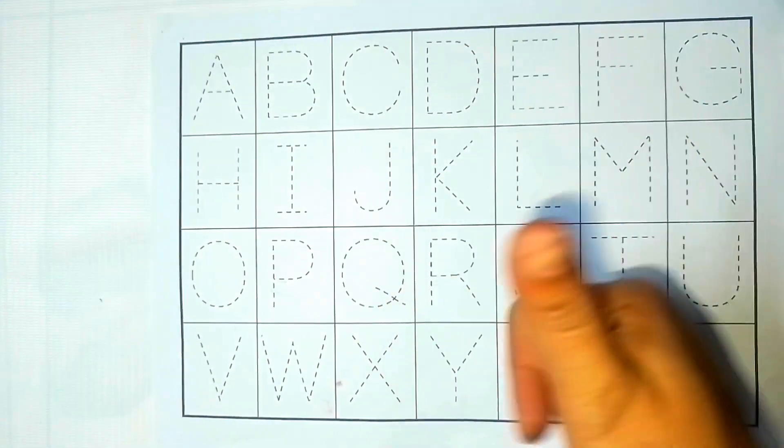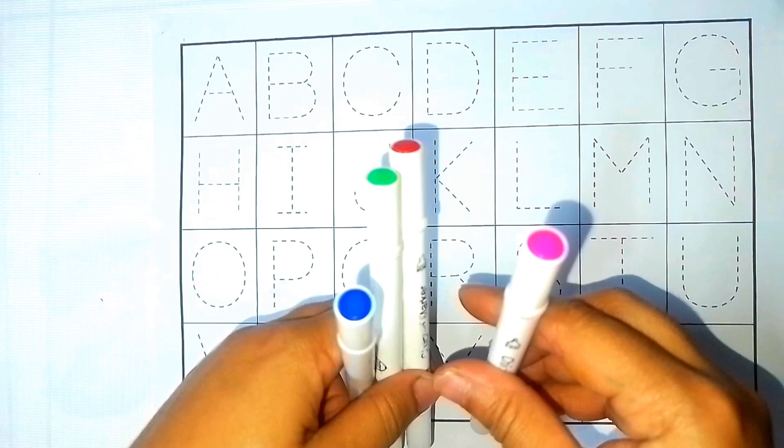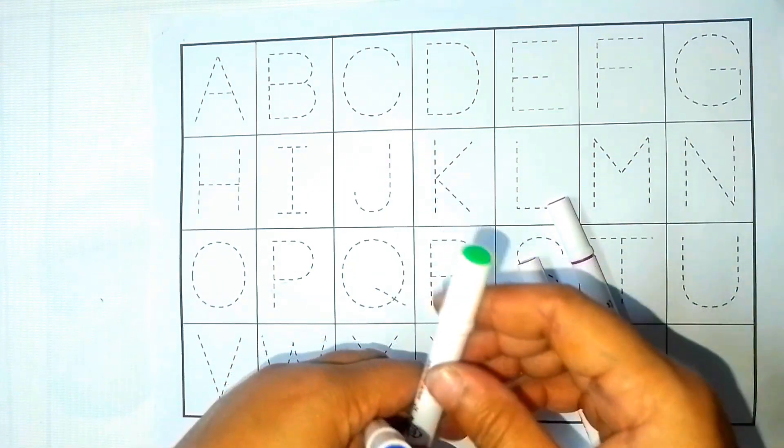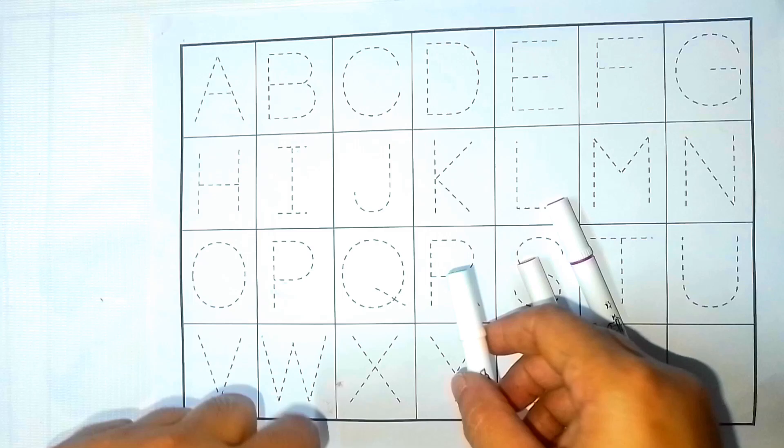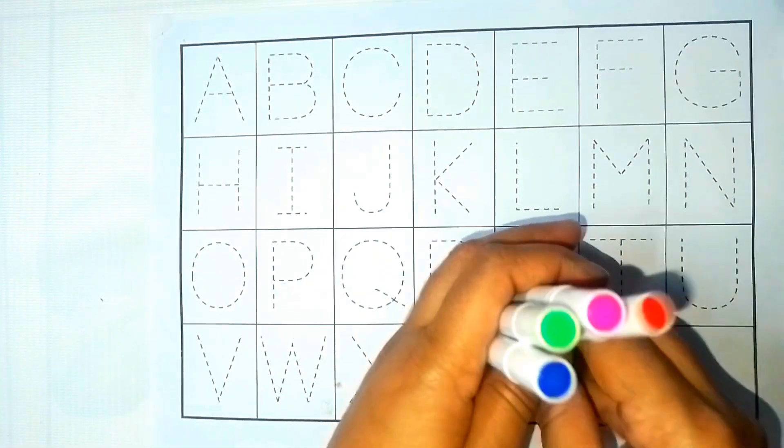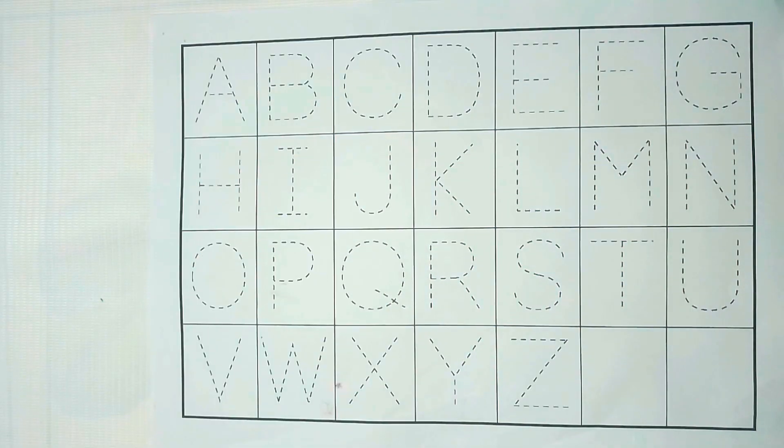Hello everyone, welcome back to my channel. In our colors, what do we have in our colors? Pink, red, green and blue color. Now let's start alphabet.